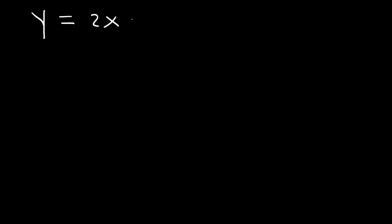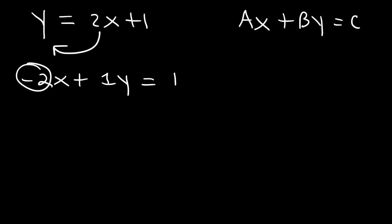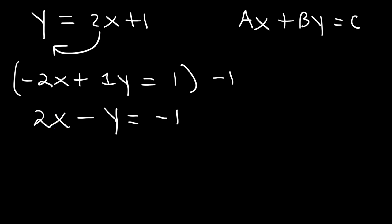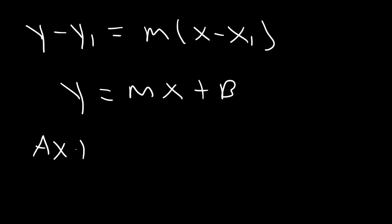Now let's convert it to standard form. In standard form, the x and y variables have to be on the same side. Subtract 2x from both sides to get -2x + y = 1. To eliminate the negative sign, multiply both sides by -1, giving 2x - y = -1. That's the linear equation in standard form. So now you're familiar with all three forms: point-slope form y - y1 = m(x - x1), slope-intercept form y = mx + b, and standard form ax + by = c.